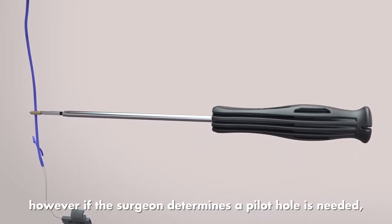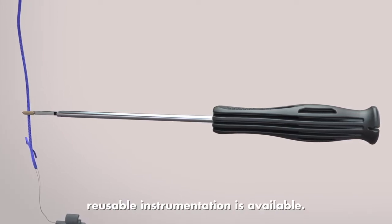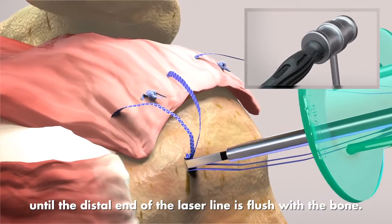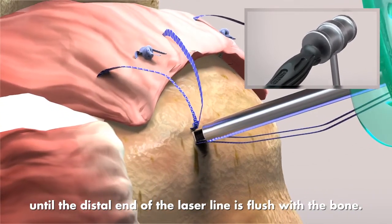The eyelet inserter is self-punching; however, if the surgeon determines a pilot hole is needed, reusable instrumentation is available. Mallet the proximal end of the eyelet inserter until the distal end of the laser line is flush with the bone.